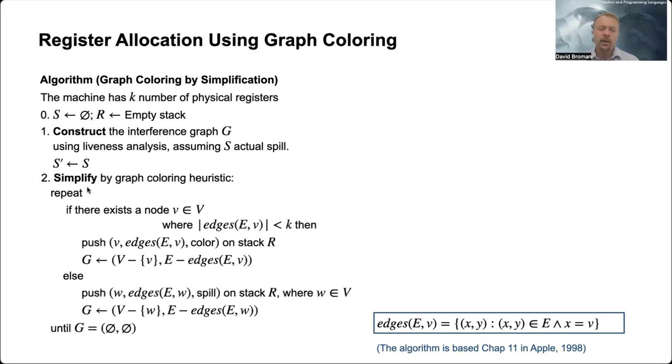What we're doing in the simplify step is that we are taking the graph, picking node by node, and then constructing this stack here. So we're pushing things on the stack while we are deconstructing the graph. So in the end here, we have a graph consisting of no edges and no nodes, but we have pushed everything to this stack.